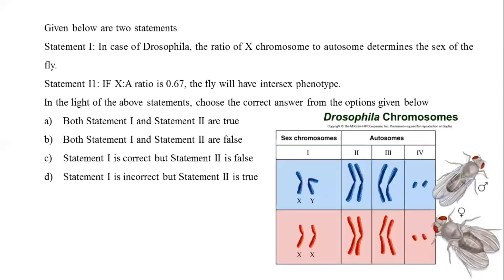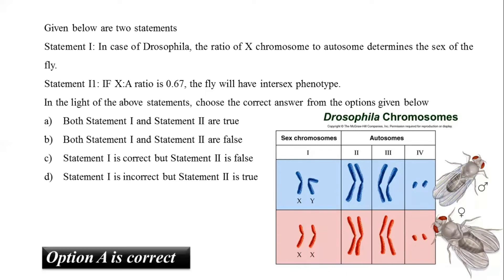According to the genetic balance theory of sex determination, the ratio of X chromosomes to the number of sets of autosomes determines sex in Drosophila. Sex determination is achieved by a balance of female determinants on the X chromosome and male determinants on autosomes. If the X/A ratio falls between 0.5 and 1, the genotype shows an intersex phenotype. The X/A value is 1 for a normal female and 0.5 for a normal male. Both statements 1 and 2 are correct.